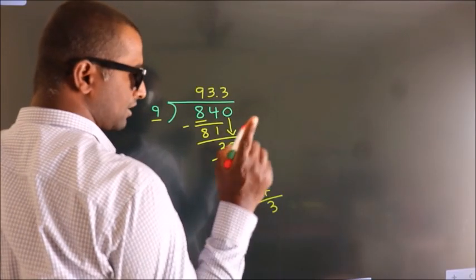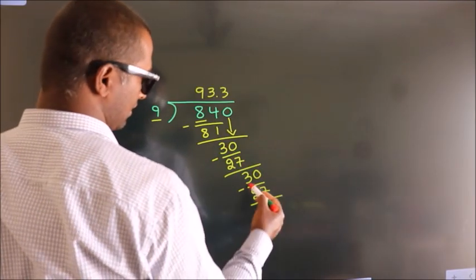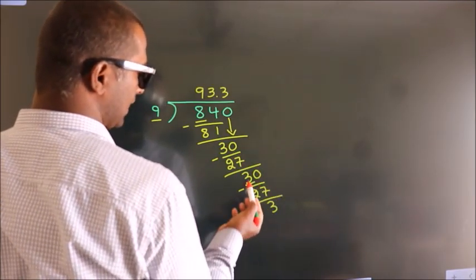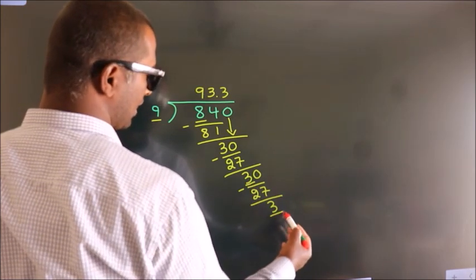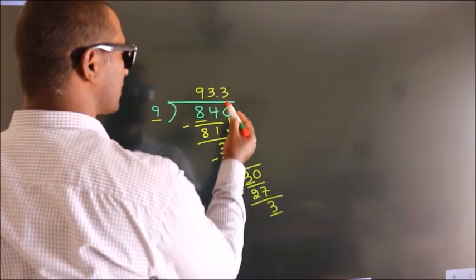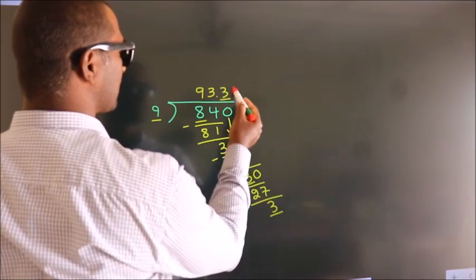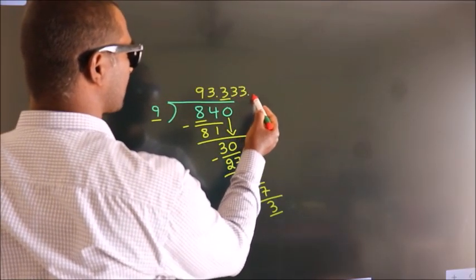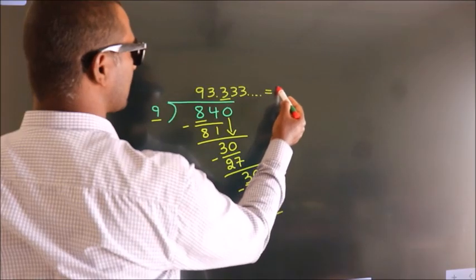Now you observe, we had 3 here, and we got 3 again. That means this number keeps on repeating. So this is our quotient.